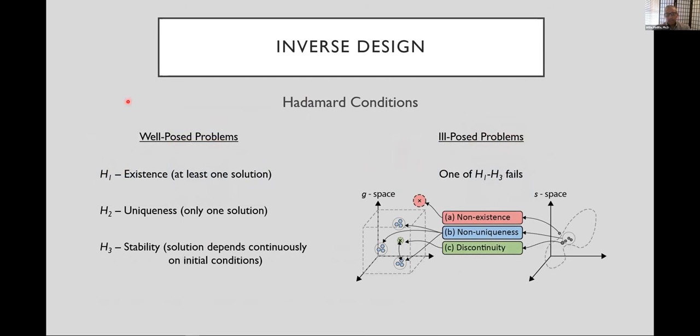Now why is this challenging? Well this was laid out by Hadamard over 100 years ago, and the way that he talked about this is to say that inverse problems are ill-posed problems. And in order to understand what an ill-posed problem is, we should first specify what a well-posed problem is. Again, Hadamard laid out these conditions, he specified that we should have existence, at least one solution should exist. Uniqueness, ideally only one solution should exist, and stability, that is your solution should depend continuously on initial conditions.